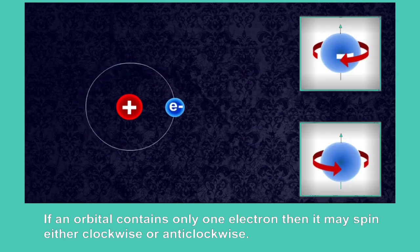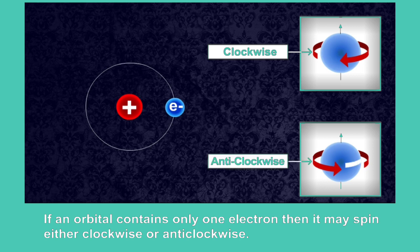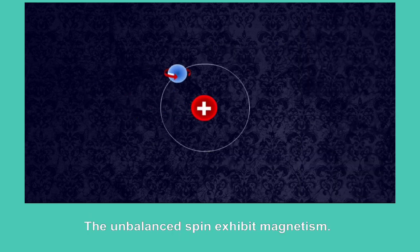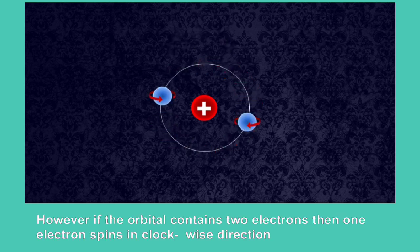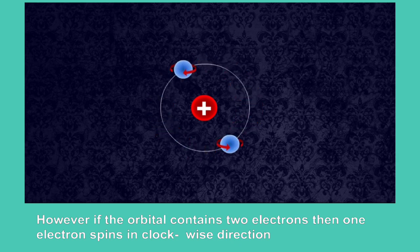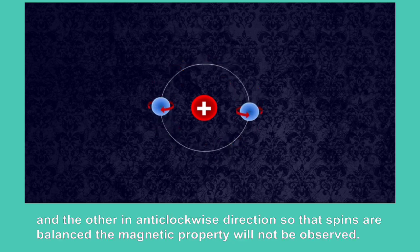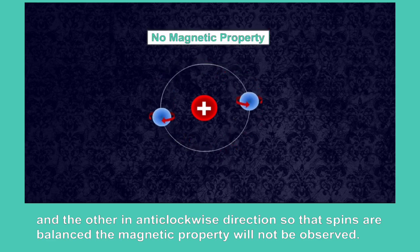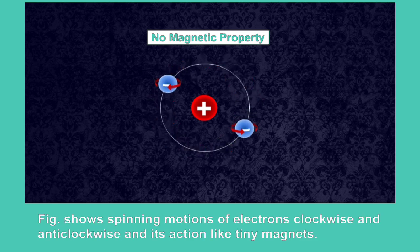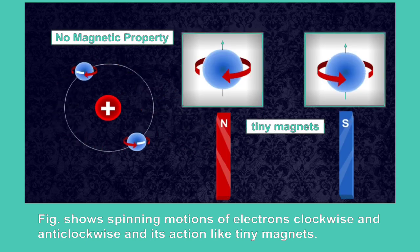If an orbital contains only one electron, it may spin either clockwise or anticlockwise. The unbalanced spin exhibits magnetism. However, if the orbital contains two electrons, then one electron spins clockwise and the other anticlockwise, so that spins are balanced and the magnetic property will not be observed. The figure shows spinning motions of electrons — clockwise and anticlockwise — and their action as tiny magnets.